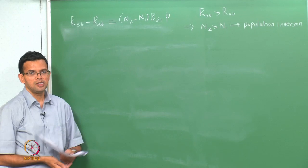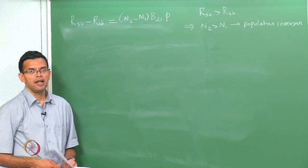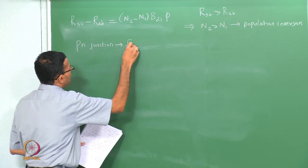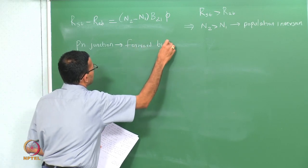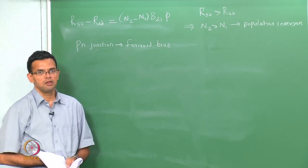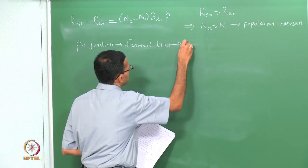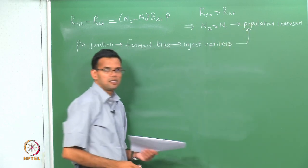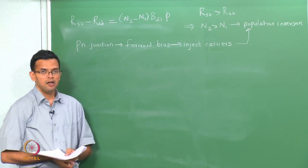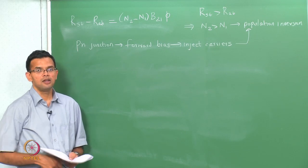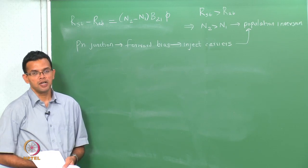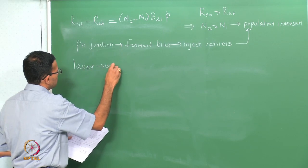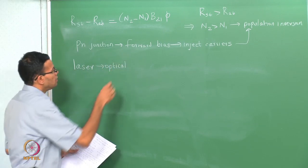Population inversion is usually achieved by external means. The simple idea is that if you have a p-n junction you could apply a forward bias. We saw earlier that when you apply a forward bias you inject carriers into the p-n junction, and these carriers create the population inversion. A semiconductor laser structure is similar to an LED but we also have other optical components — typically a laser will have optical resonators whose function is to reflect the light so that a certain intensity of laser is built up.